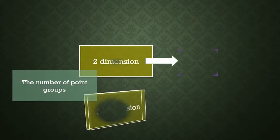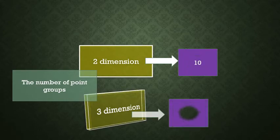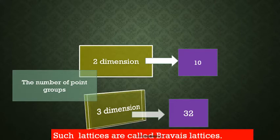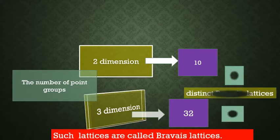The number of point groups in two and three dimensions are ten and thirty-two, respectively. Such lattices are called Bravais lattices. These point groups produce only five and fourteen distinct Bravais lattices respectively, that is, mirror lattices or similar lattices can be counted as one.